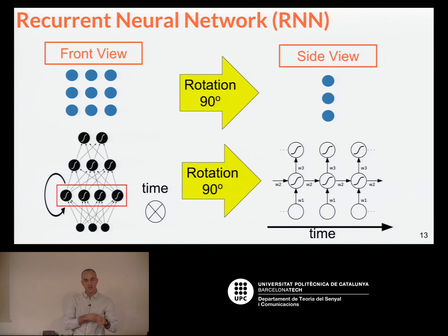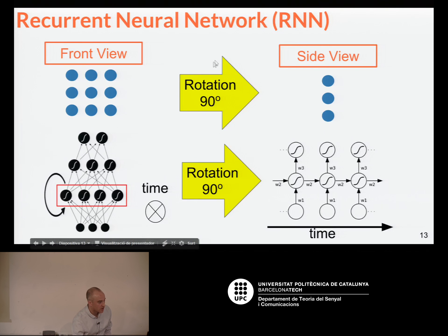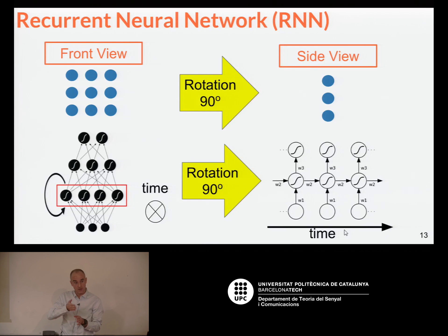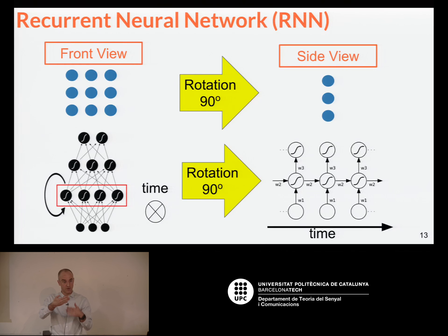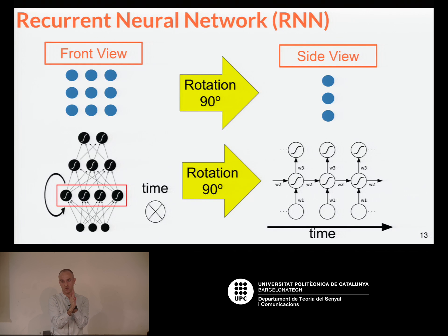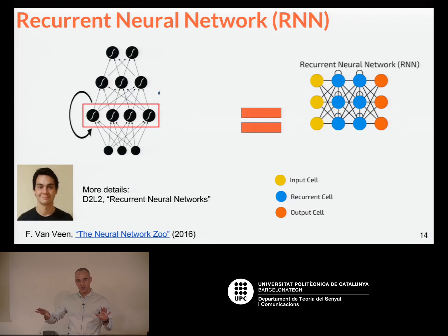When you look at these networks, something tricky to keep in mind is that so far we've been presenting networks in a frontal view — input, output, and you go up. But when you introduce time, you want to represent the temporal sequence, and many representations of these networks involve a 90-degree rotation from a frontal view to a side view. Just remember which view you're looking at, especially when the recurrent networks topic is introduced tomorrow.